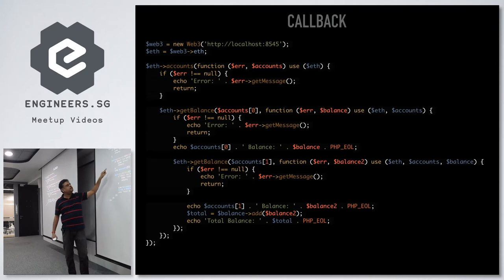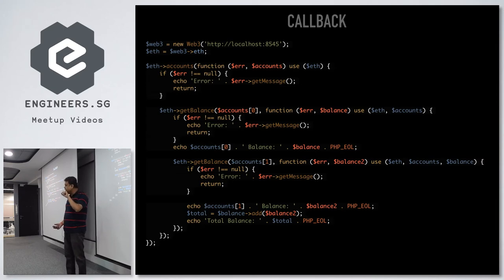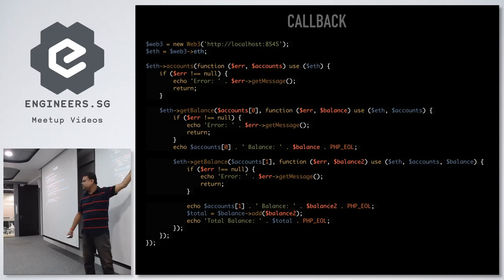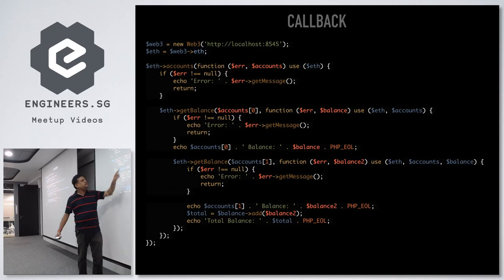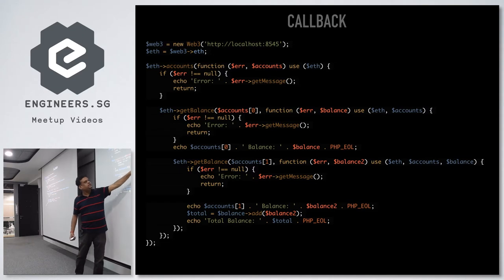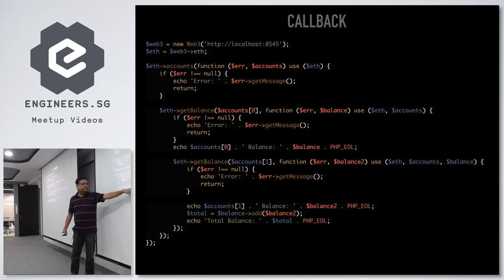Once you confirm there's no error, you check the balance for the first account. In JavaScript you can refer to variables in the previous scope, but in PHP you need to pass references using a `use` statement. So I need to pass the `eth` object and the `accounts` reference to continue and get the balance of the second account. Then again check for errors, print the balance for the first account, make another nested call to get the second account's balance, total them up, and print them.